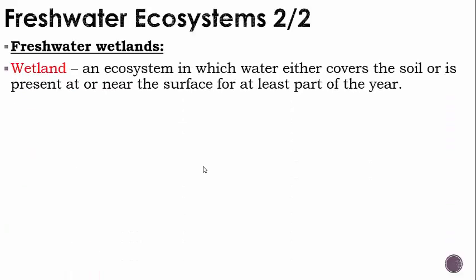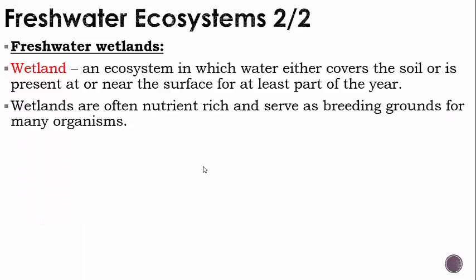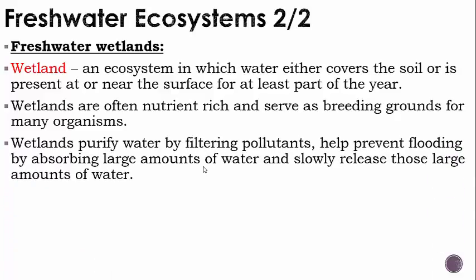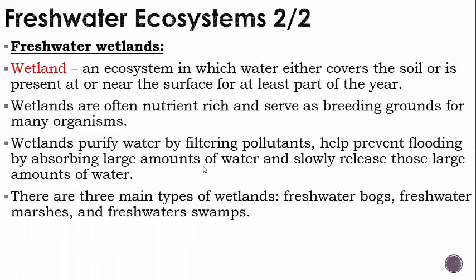Freshwater wetlands: a wetland is an ecosystem in which water either covers the soil or is present at or near the surface for at least part of the year. Wetlands are often nutrient-rich and serve as breeding grounds for many organisms. Wetlands purify water by filtering pollutants, help prevent flooding by absorbing large amounts of water, and slowly release that water throughout the seasons. There are three main types: freshwater bogs, freshwater marshes, and freshwater swamps.